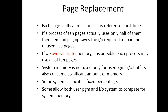Some systems allocate a fixed percentage of memory for IO buffers and for user programs. In other types of systems, both user processes and the IO subsystem compete for all of the system memory, and the memory is divided between the two.